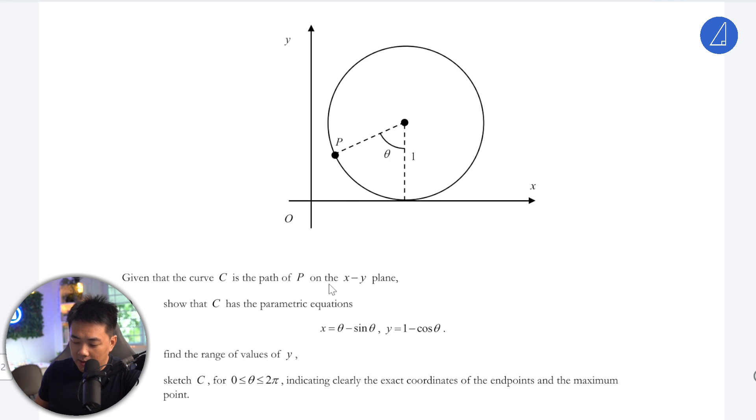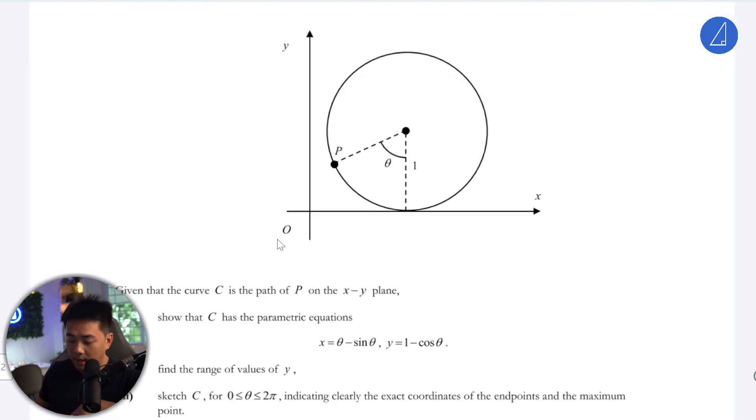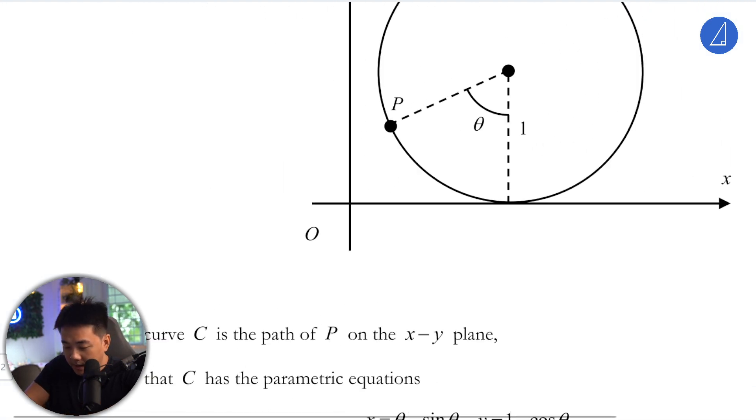So that's the thing about the first part. Given that point P is on the xy plane, meaning on the paper, show that the parametric equation of this P as it moves along is given by x = θ - sin θ and y = 1 - cos θ. Let's try to understand this. Firstly, just let P be x and y because that is the coordinate you want to find. Basically, this is your x and this is your y.